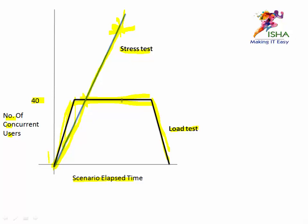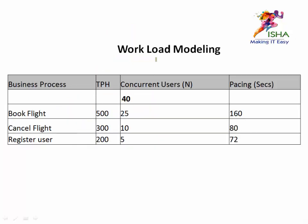Now how do we build this stress test on the controller? Let's say the workload modeling sheet has: book flight 25 users, cancel flight 10 users, register users 5 users — 40 total. For the stress test, increase the load by three times: so 25 becomes 75, 10 becomes 30, 5 becomes 15, and overall users go from 40 to 120.